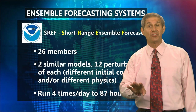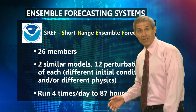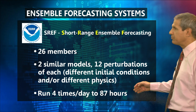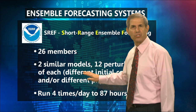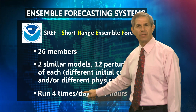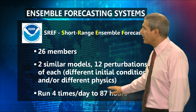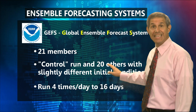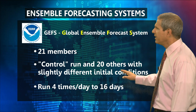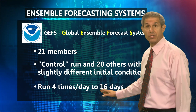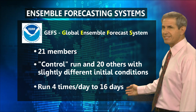Now let me introduce you to four ensemble forecasting systems. The short-range ensemble forecasting system, known as the SREF, has 26 members or strands of spaghetti that come from two very similar models each tweaked 12 times. This ensemble runs four times a day, out to 87 hours in the future. The other American ensemble system is the GEFS, with 21 members — the control run and 20 others with slightly different initial conditions — run four times per day, all the way out to 16 days.